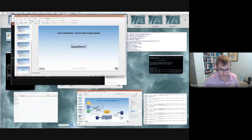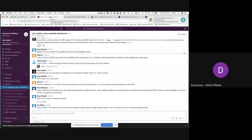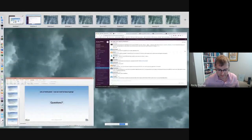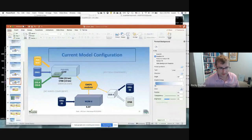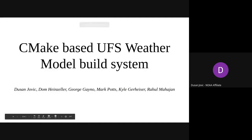Our last talk for this session is from Dusan Jovic. Thank you all for joining this presentation about the CMake-based UFS weather model build system. I'll give some basic information and updates on our transition to CMake from the GNU make-based system. I'll mainly focus on the UFS weather model, but other UFS components like the preprocessor, UFS utils, the post processor UPP, and the NCEP libraries are also using the CMake-based build system. The UFS weather model currently has two build systems — the original GNU make-based system using handwritten makefiles is still considered the official build system at EMC, mainly because it's still used in production.